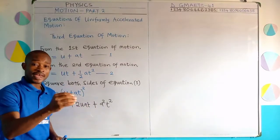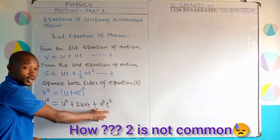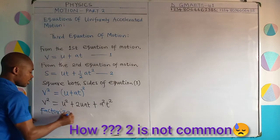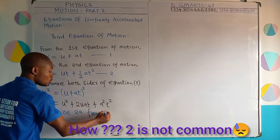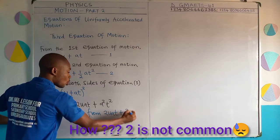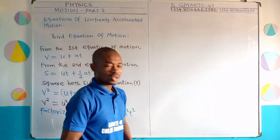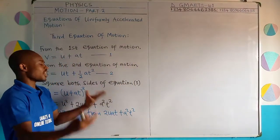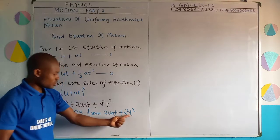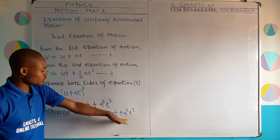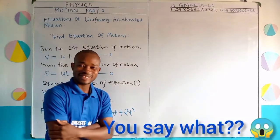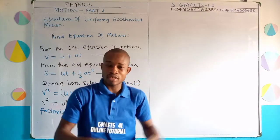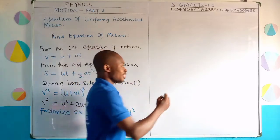At this point, I am going to factorize 2A from these two terms: 2UAT plus A squared T squared. Someone might wonder — who has knowledge of mathematics — why can I factorize 2 from here? There is no 2 in the second term. It is possible. This is mathematics. Let me quickly show you something about factorization that maybe you have not known before.